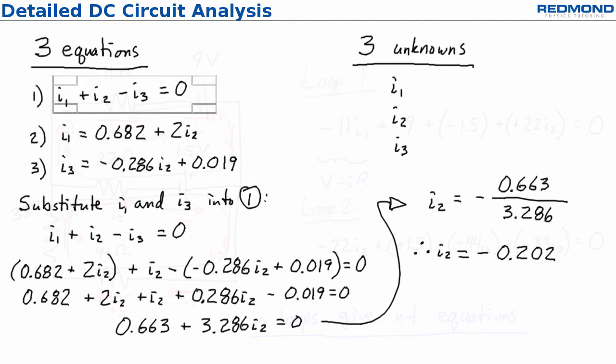Notice that I2 is negative. The negative sign tells me that the current I2 is actually in the opposite direction to what I guessed on the diagram. I don't need to do the entire problem again though. It's enough just to know that the particular current is in the other direction.